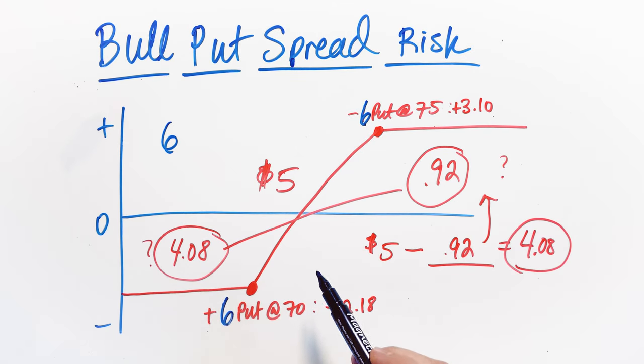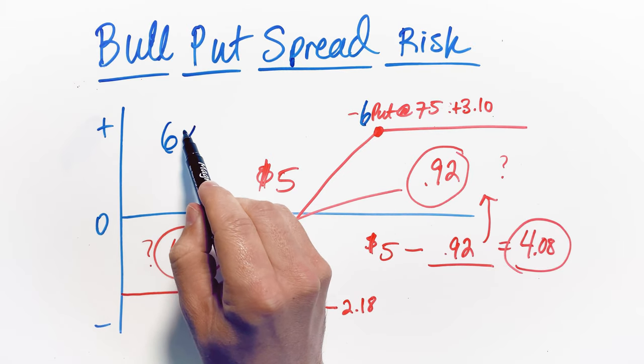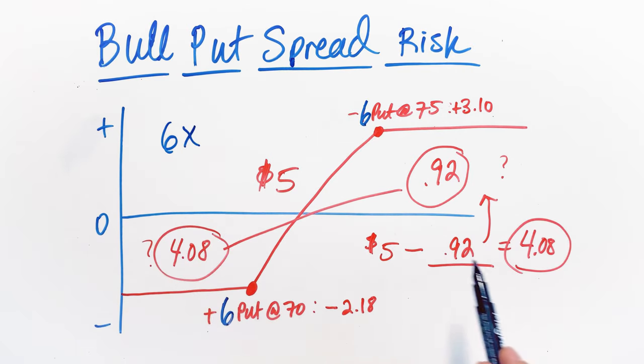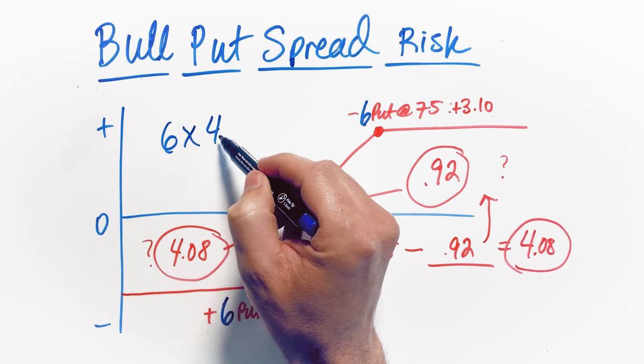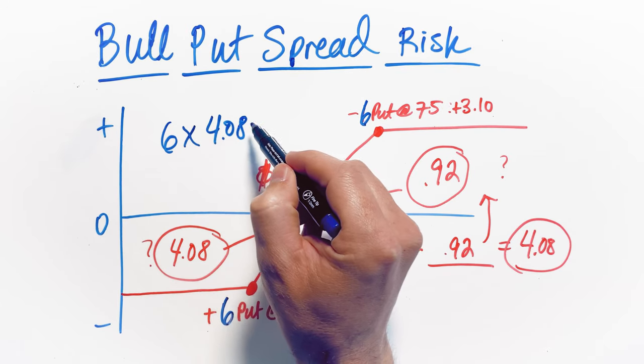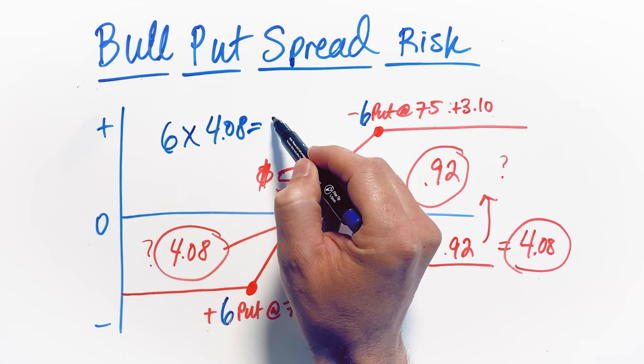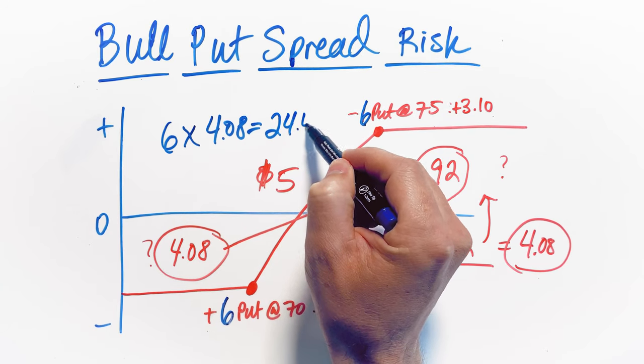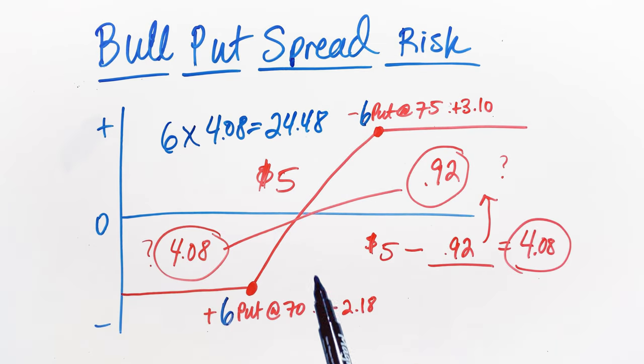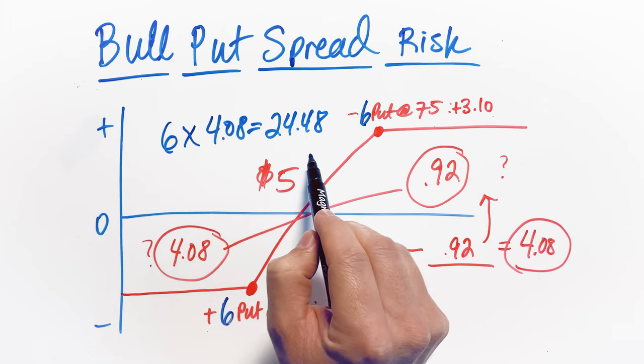Now what we have to do is we have to take six contracts times the $4.08 that we have here as far as risk per spread that we're selling and that gives us a total risk of $2,448 which again, remember, with option contracts, this is not $24.48.